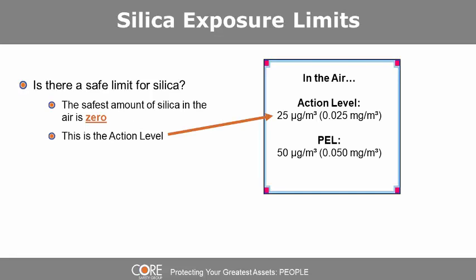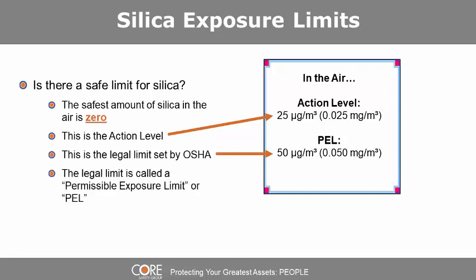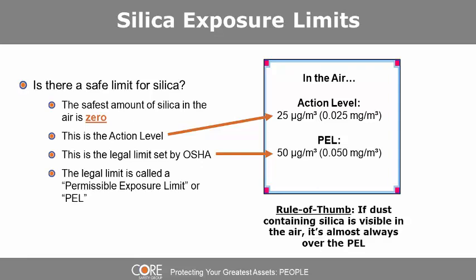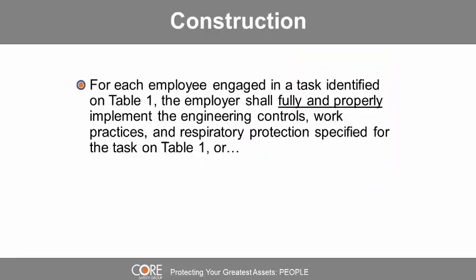OSHA's current action level is 25 micrograms per cubic meter. The legal limit set by OSHA is 50 micrograms per cubic meter, called the permissible exposure limit, or PEL. As a rule of thumb, if dust containing silica is visible in the air, it's almost always over the permissible exposure limit.